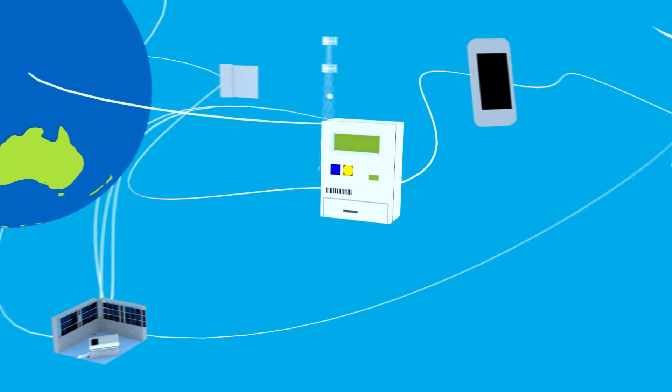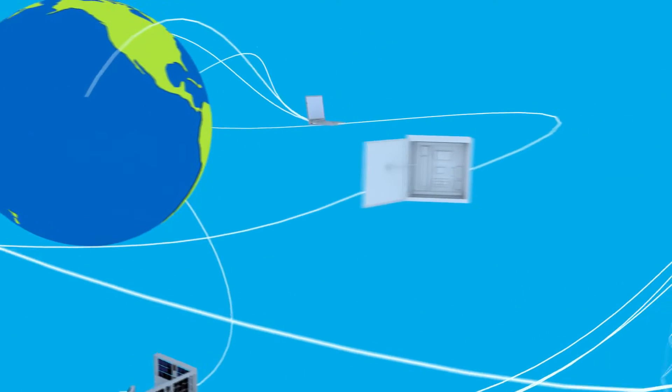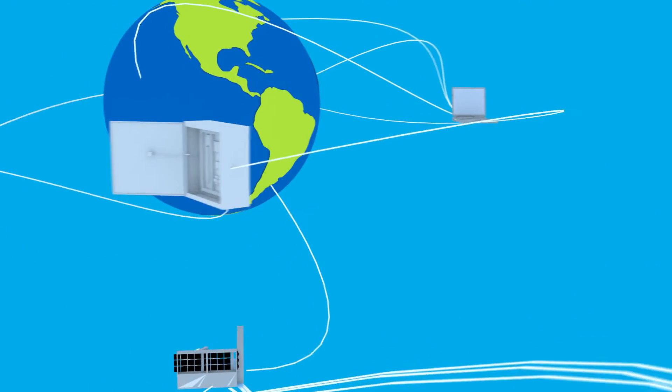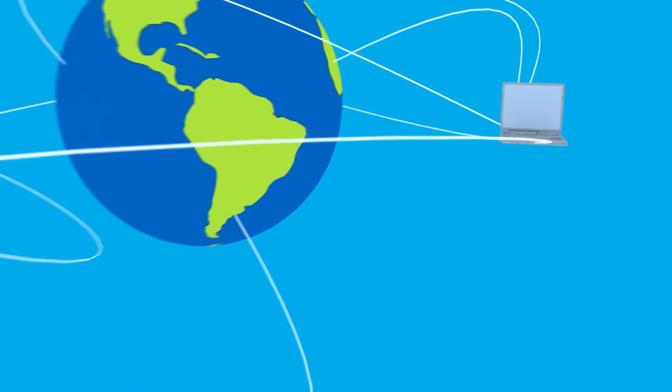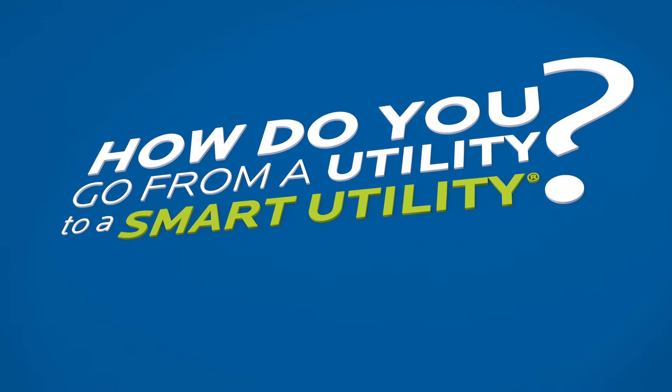In our world, everything is connected. Communication networks are the critical data link. More and more utilities need to leverage information and technology to be more efficient, responsive, and resilient. So how do you go from being a utility to a smart utility?